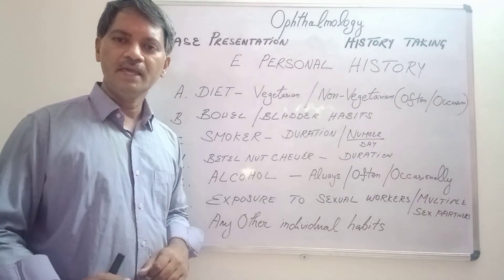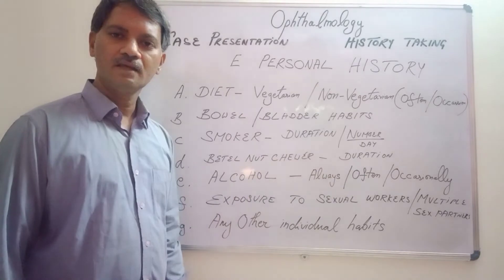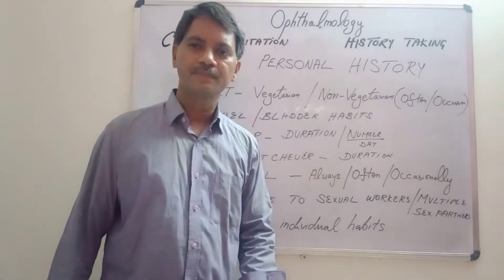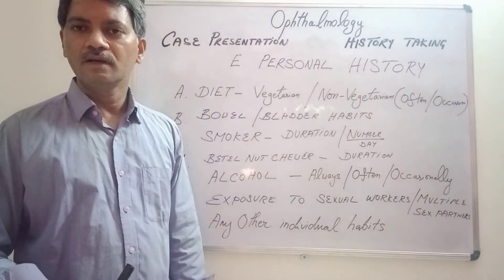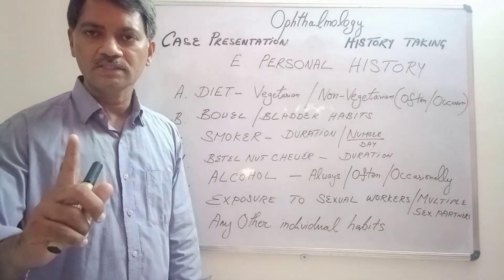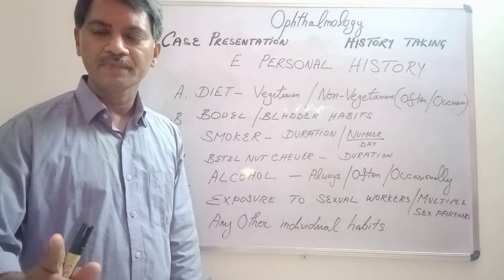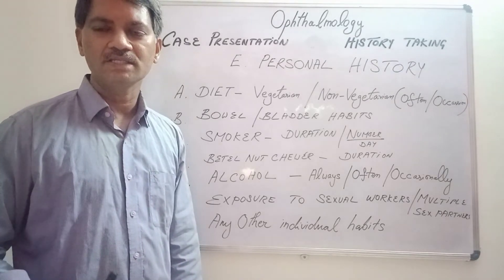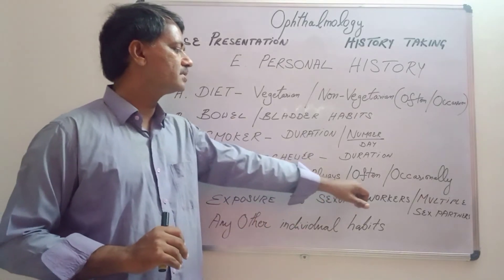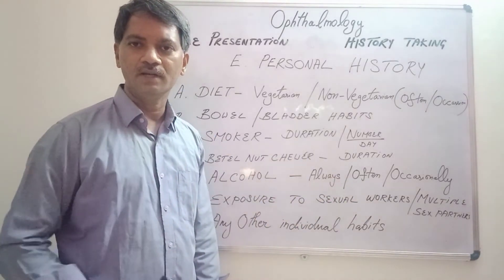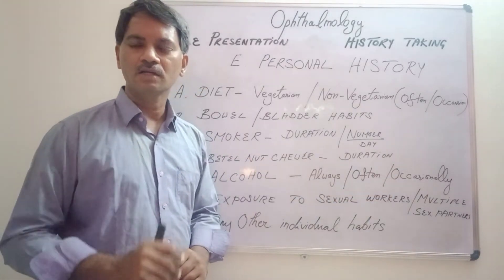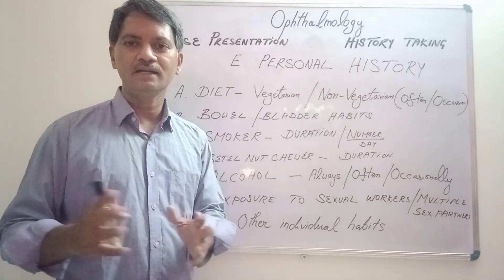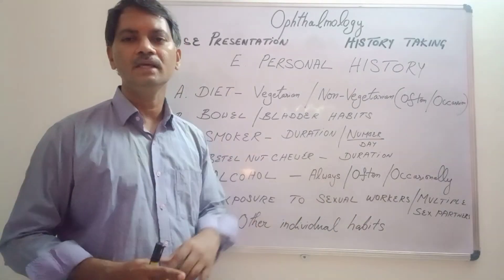Next is consumption of alcohol. A patient may consume alcohol always, often, or occasionally. When you should brand a person as alcoholic is when a person is consuming alcohol always and is always under the influence of alcohol. A patient who consumes alcohol every day — 50 ml — or a patient who consumes alcohol only when friends get together or they go to a function, those people should not be branded as alcoholic.